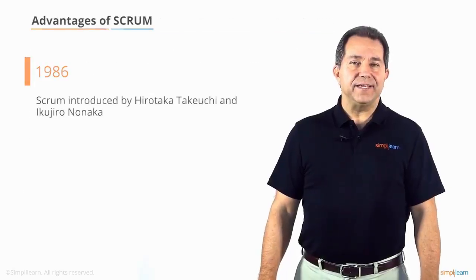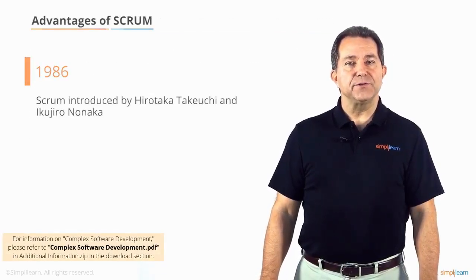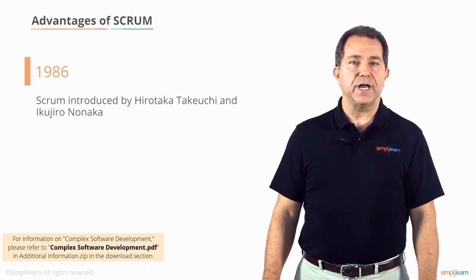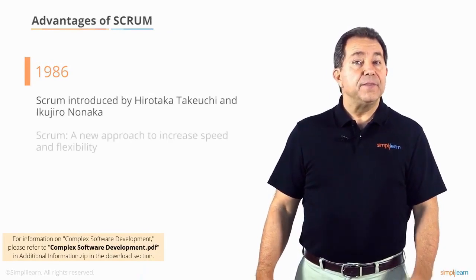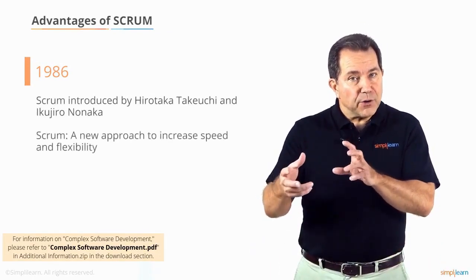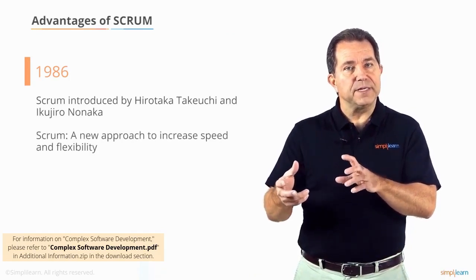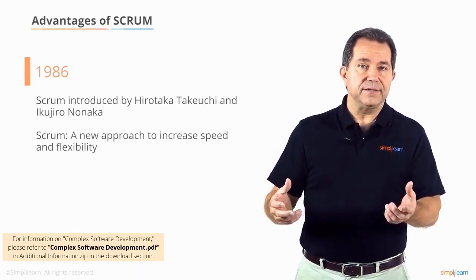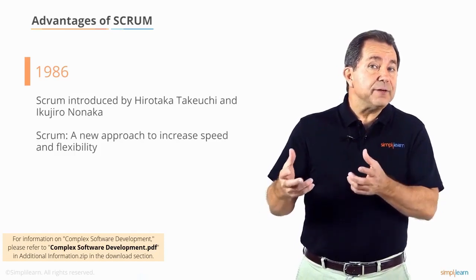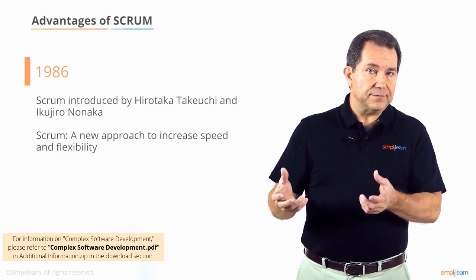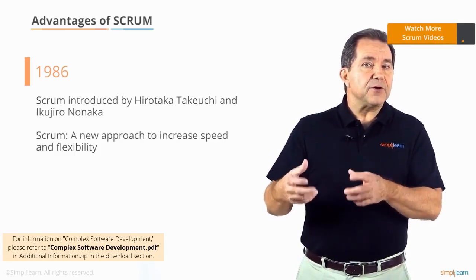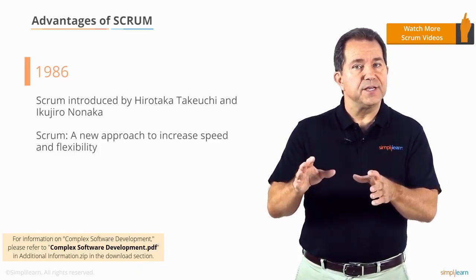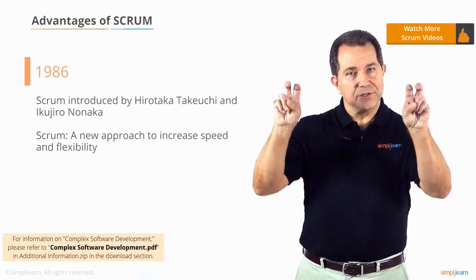In 1986, Scrum was first introduced by Hirataka Takuchi and Aikujira Nonaka. They described it as a new approach to commercial product development that would increase speed and flexibility — they actually called it the rugby approach. Then in the early 1990s, this method was first referred to using the single word Scrum.